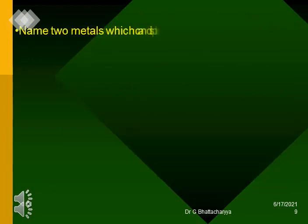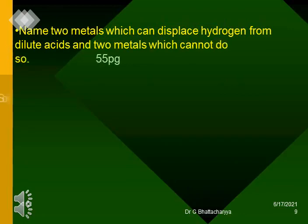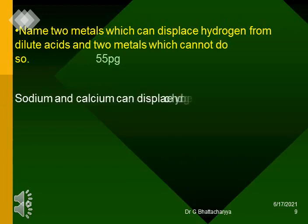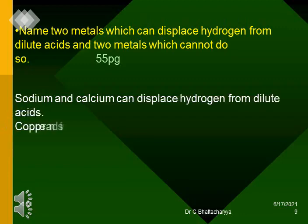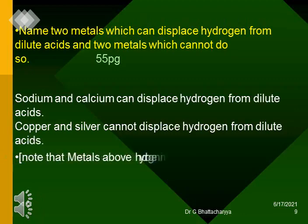Name two metals which can displace hydrogen from dilute acids and two metals which cannot do so. Sodium and calcium can displace hydrogen from dilute acids. Copper and silver cannot displace hydrogen from dilute acids. Note that metals above hydrogen in the activity series can displace hydrogen from dilute acids.